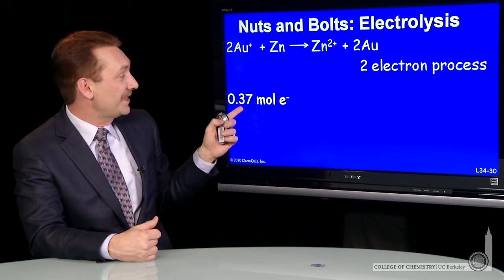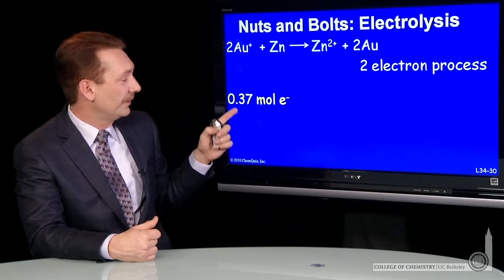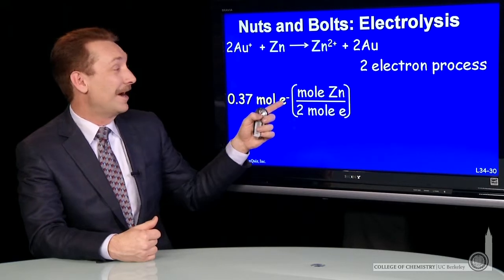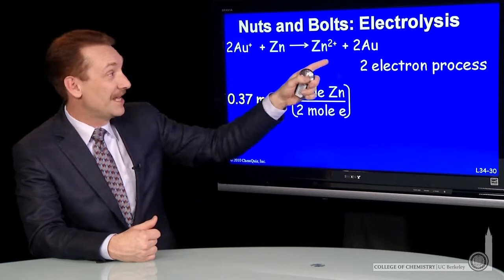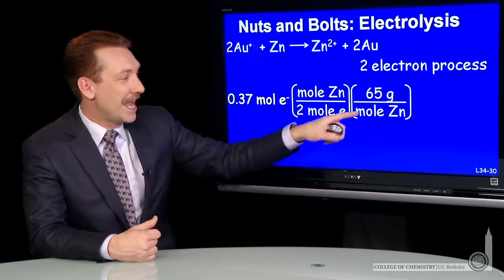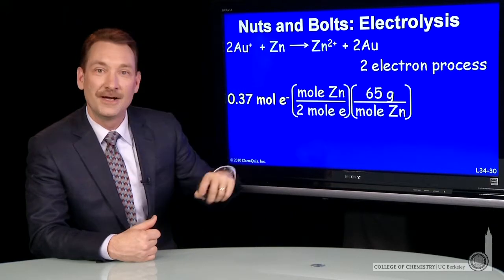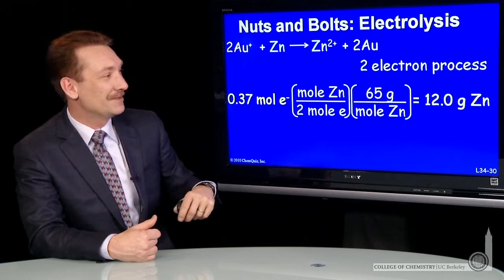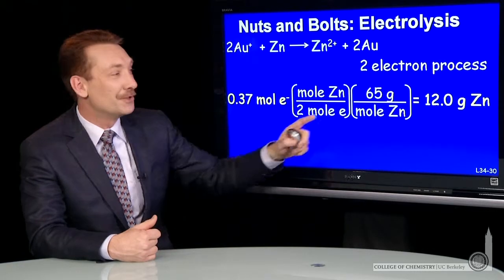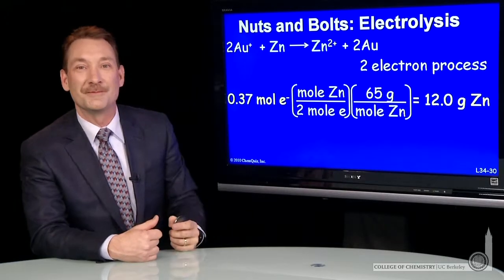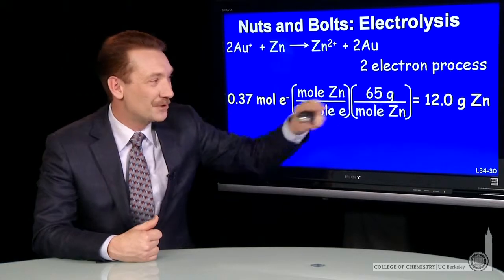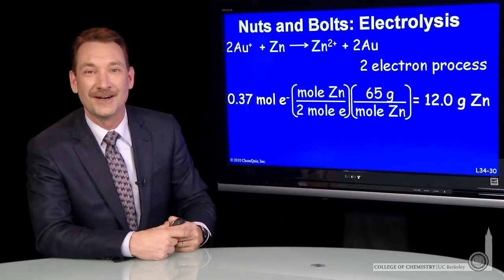So 0.37 moles of electrons are going to react. And it takes two electrons to produce a mole of zinc. And a mole of zinc has a mass of 65 grams. So overall, my 0.37 moles of electrons produces 12 grams of zinc. So this electrolytic process over 10 hours produces 12 grams of zinc metal.